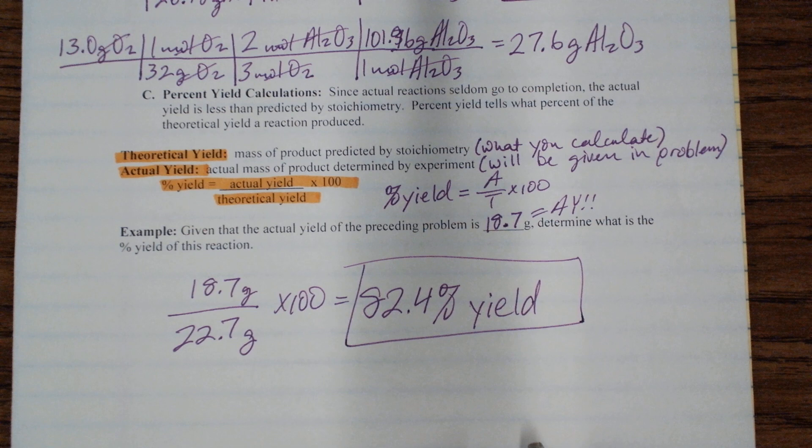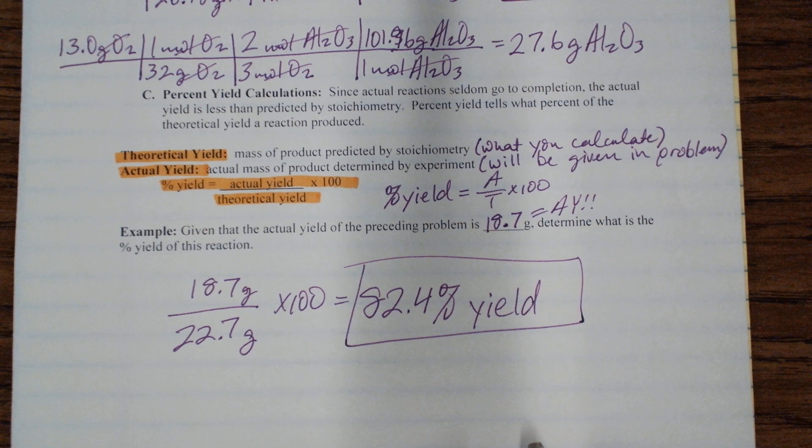So we're saying that you yielded 82 percent of what you should have gotten. What you should have gotten is what you calculated. But you didn't get what you should have gotten. You only got 82.4 percent of what you should have gotten. That's all. That's percent yield.